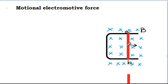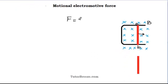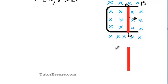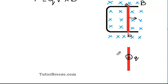The free charges within the conductor experience a force F equal to QV cross B. A positive charge Q within the conductor experiences an upward force from B to A, while a negative charge within the conductor experiences a force in the downward direction, from A to B.